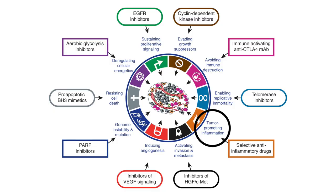Hallmark five, introduced in the 2011 paper, is tumor-promoting inflammation. Inflammation is now recognized to play a role in cancer. For example, Helicobacter pylori infection can cause gastritis — chronic inflammation of the stomach — which can result in gastric cancer. Tobacco smoke can cause inflammation and contribute to cancer. Likewise, obesity is a form of chronic inflammation in the body and is a risk factor for cancer.